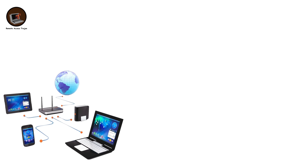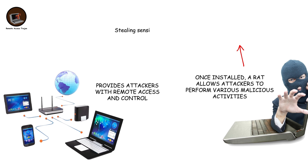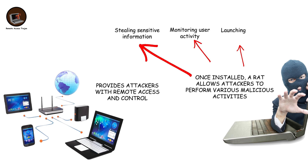Remote access trojan. A remote access trojan is a type of malware that provides attackers with remote access and control over a victim's computer or device. Once installed, a RAT allows attackers to perform various malicious activities, such as stealing sensitive information, monitoring user activity, or launching further attacks on other systems.